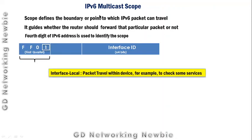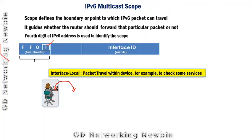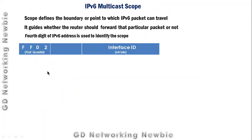When the fourth digit is 1, this refers to interface-local scope. Interface-local means the packet travels only within the device — the packet is not allowed to leave the device. This is used to check some services within the device. For example, if this is the address on a tablet or laptop, the packet will remain within the interface and will not go out.